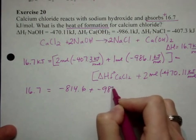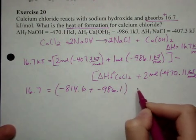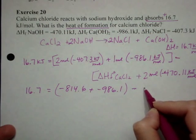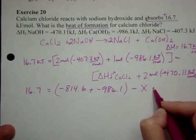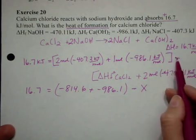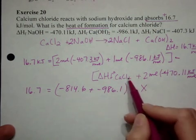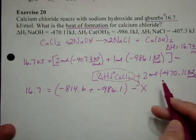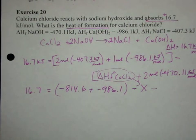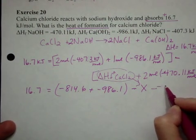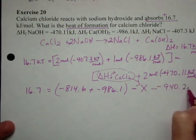That's negative 986.1 minus x. And if I just distribute the value here, I'll call this x and then I can say minus times negative 470.11, negative 940.22.